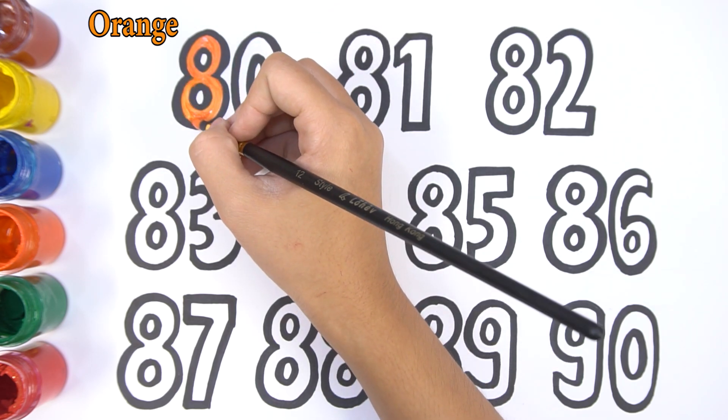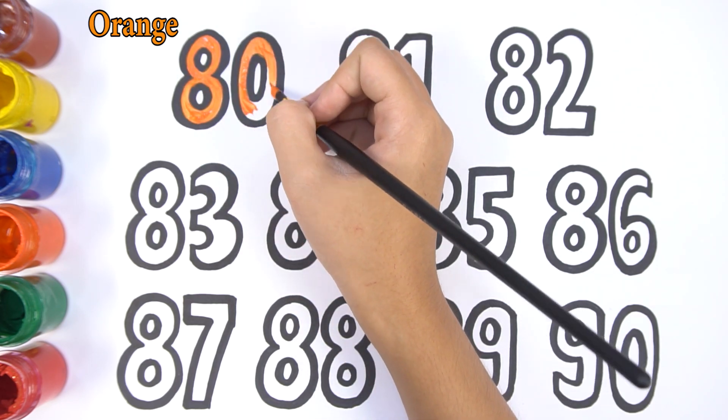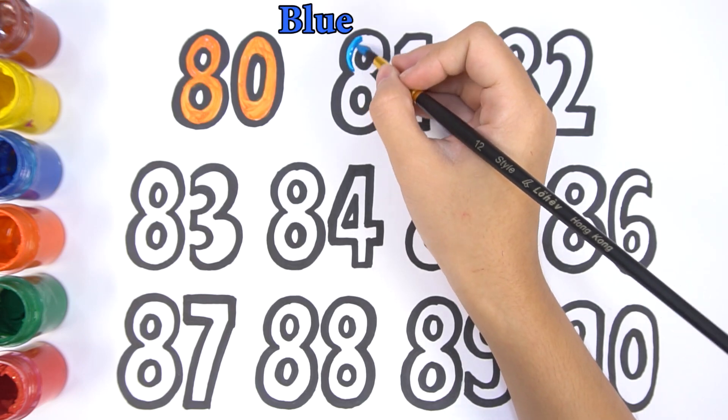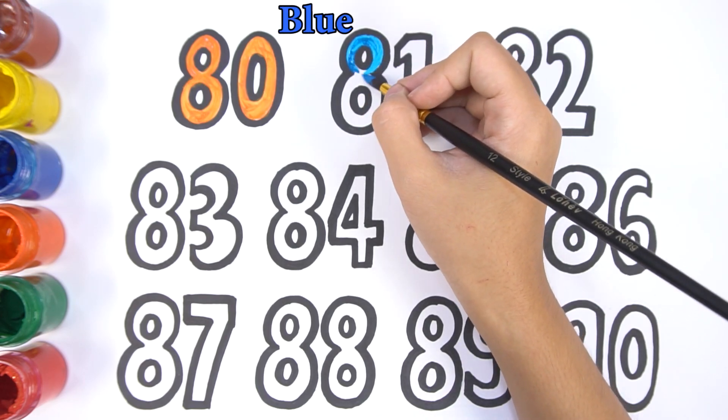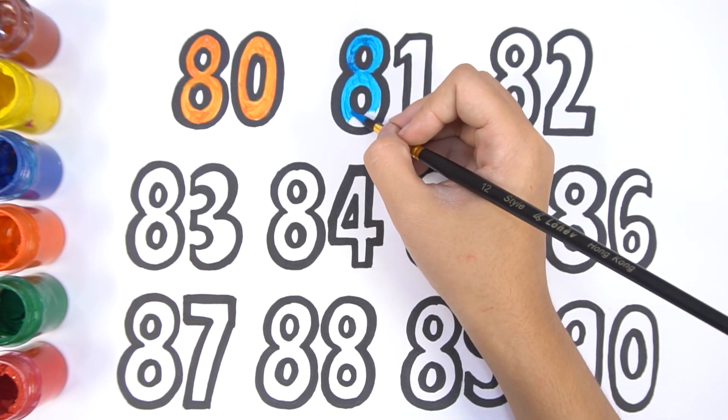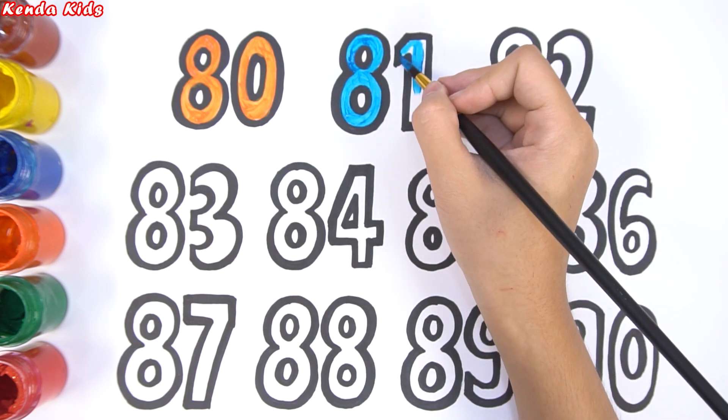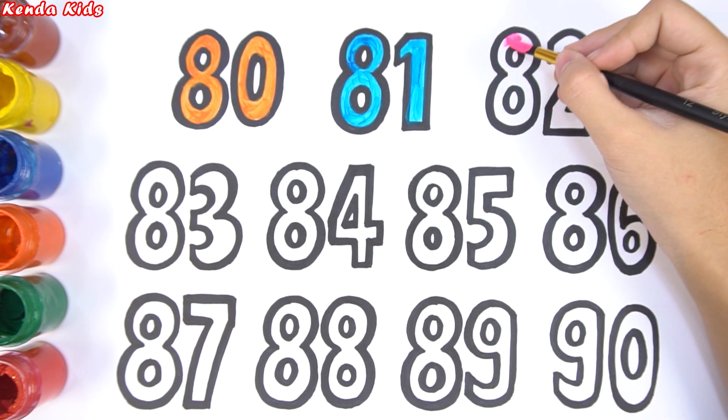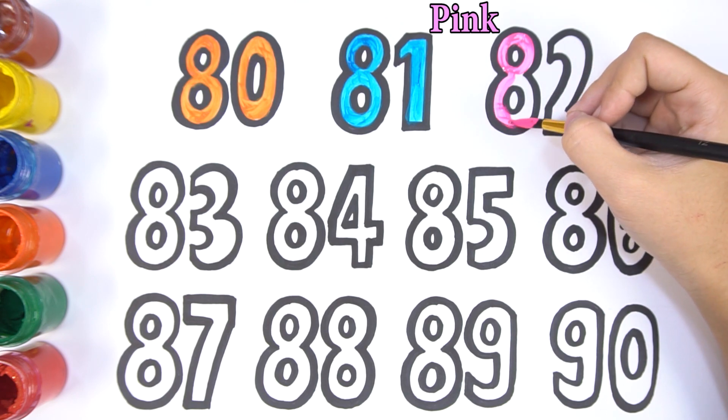First I color number 80 with orange. Number 81 is blue. Number 82 is pink.